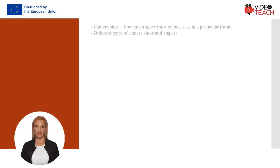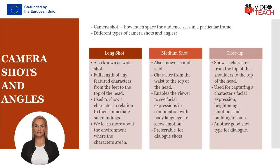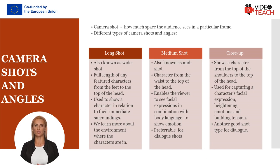A camera shot and a camera angle refer to the different ways a camera can be positioned when filming a video, and how much space the audience sees in a particular frame. Here are some of the core types. Long shot, also known as wide shot, generally shows the full length of any featured characters from the feet to the top of the head. It is used to show a character in relation to their immediate surroundings.